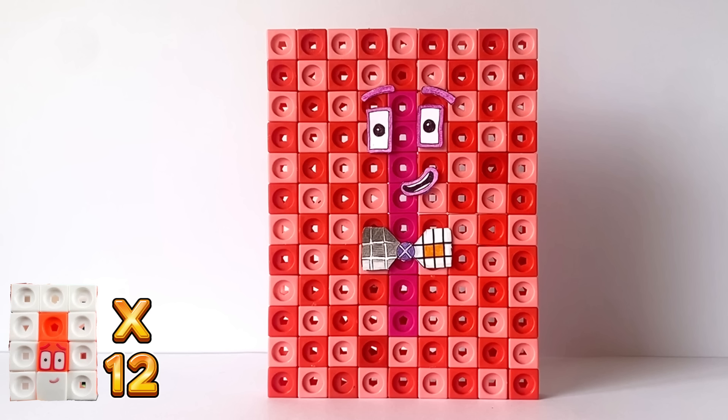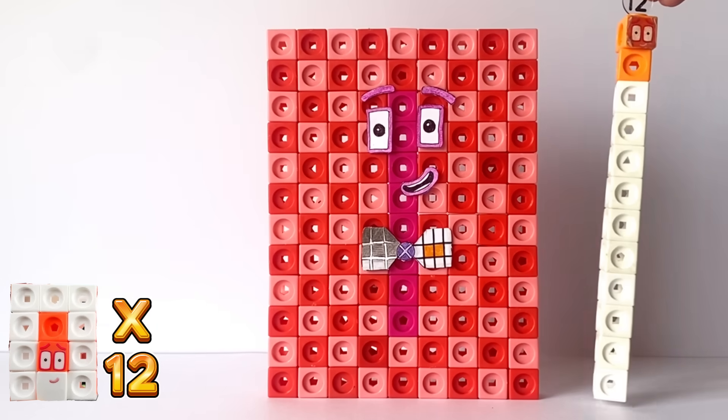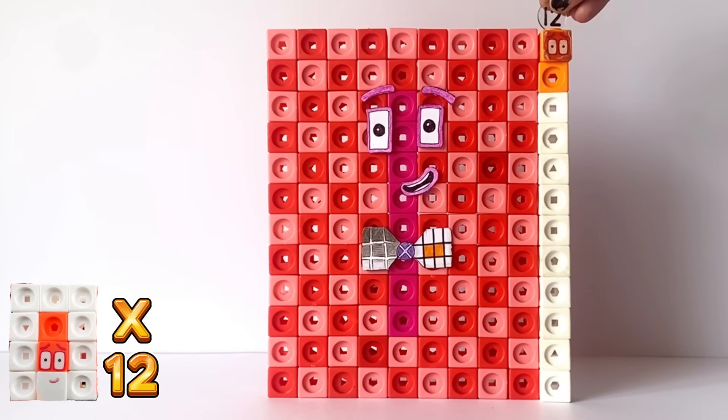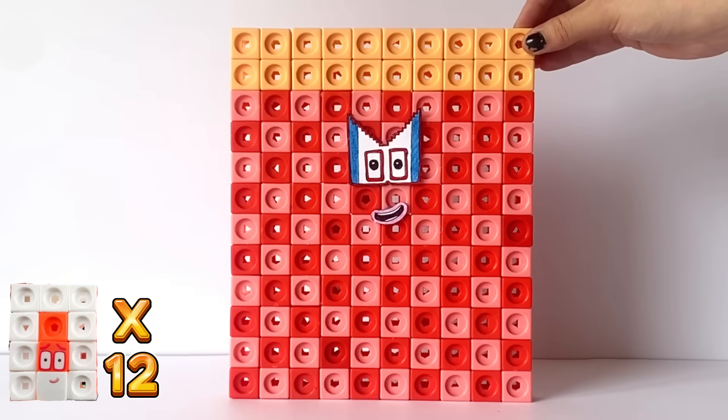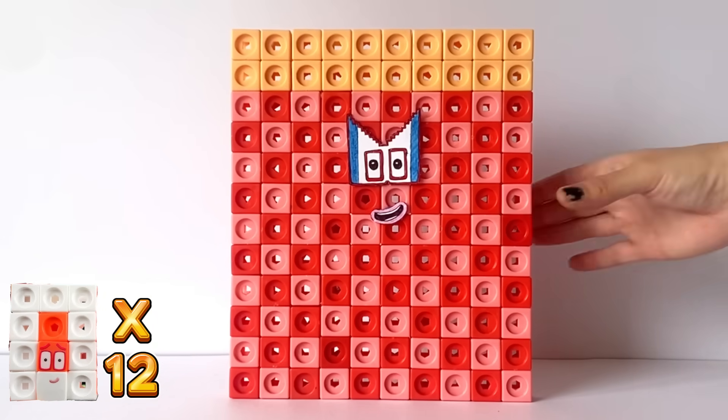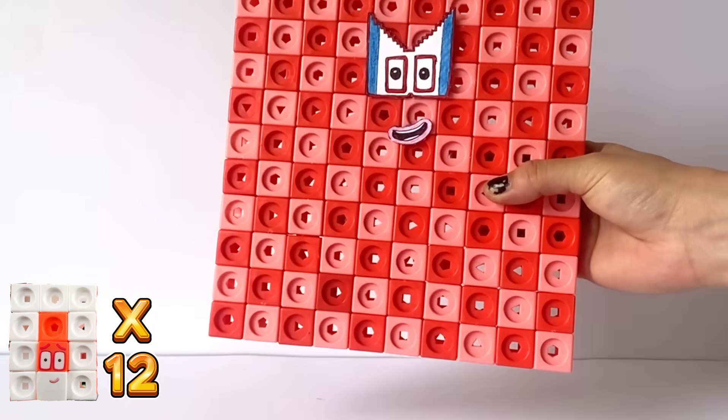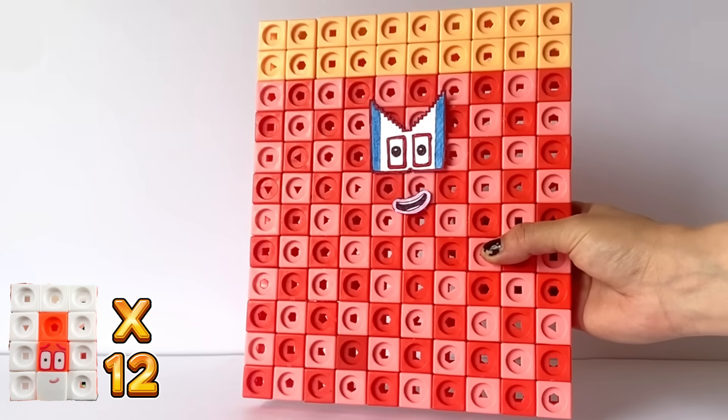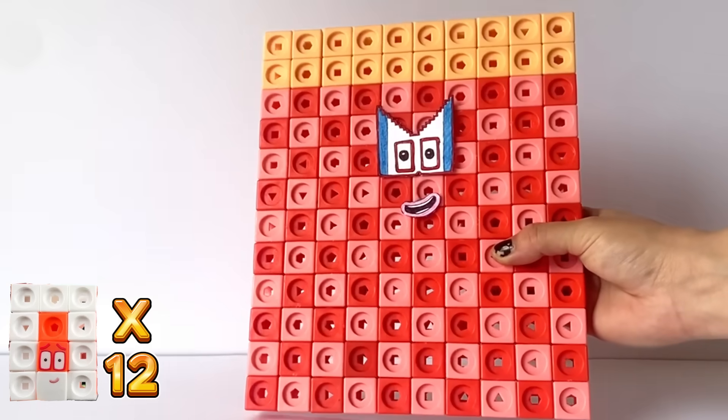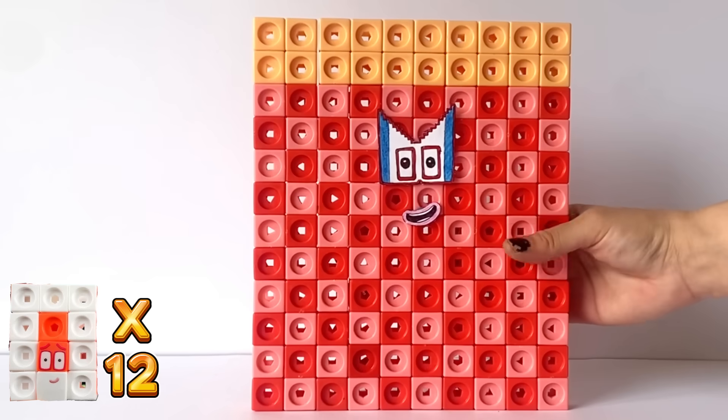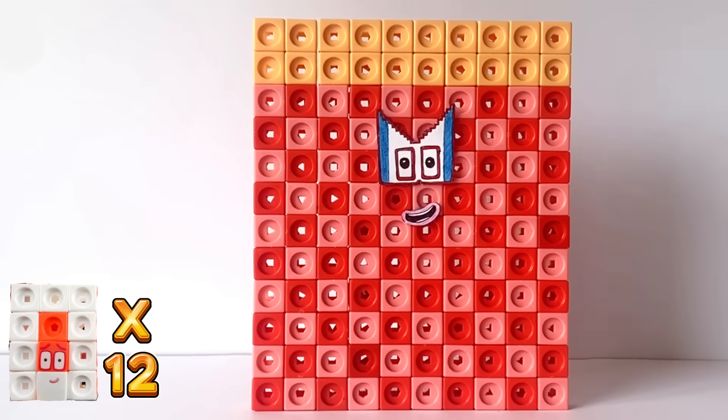And last but not least we have 10 times 12 equals 120. NumberBlock 120 also has red, white and blue step squad shape mask because NumberBlock 120 is the 15th member of the Step Squad Club. And that was the 12 times table.